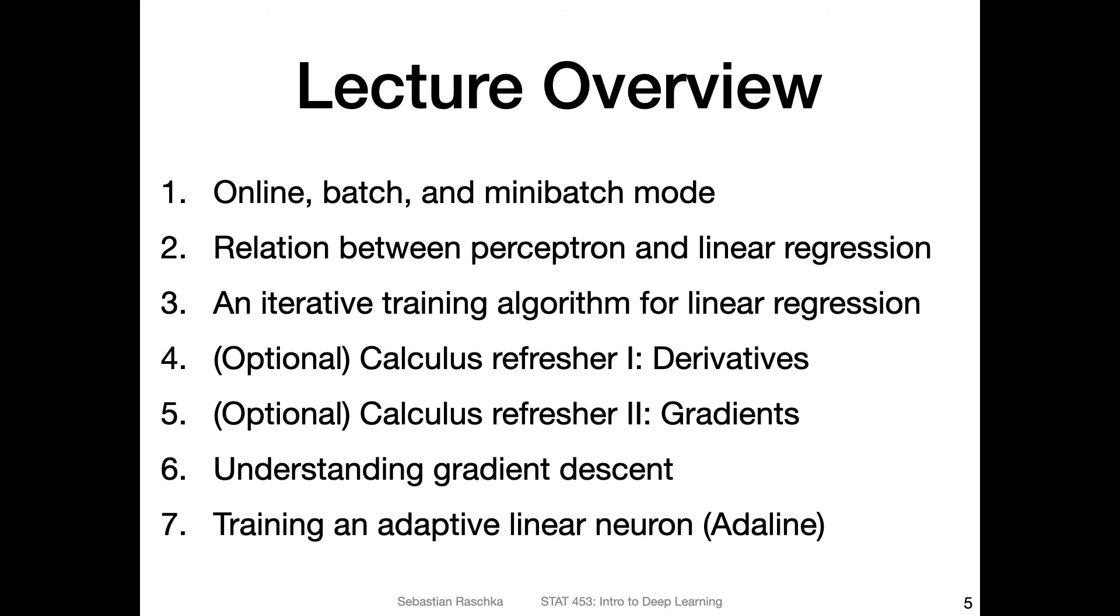So just to give you the big picture overview of things I have in mind for this lecture. First, we are going to talk about the different learning modes. There's something called online batch and mini batch learning. It is a general concept that applies to all types of single layer neural networks and multilayer neural networks, convolutional networks and everything in deep learning.